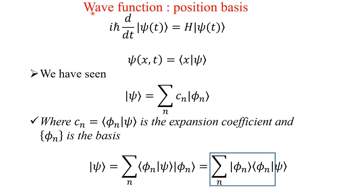Now we will see how to represent the wave function in position space. The Schrödinger wave equation is i ℏ (d/dt)|ψ(t)⟩ = H|ψ(t)⟩, where H is the Hamiltonian operator.